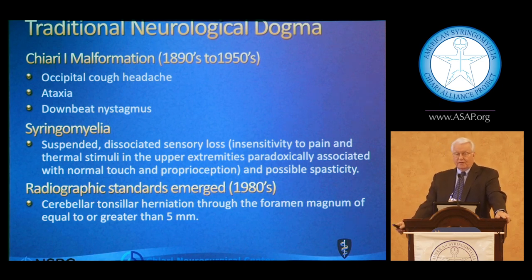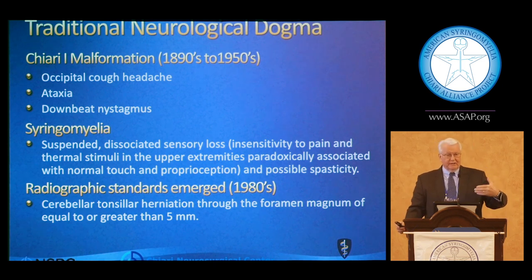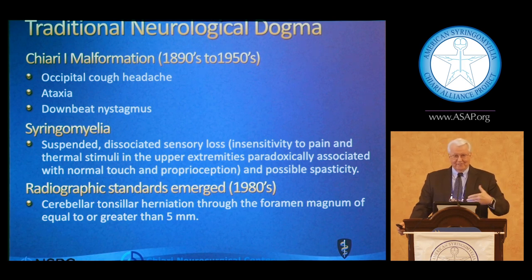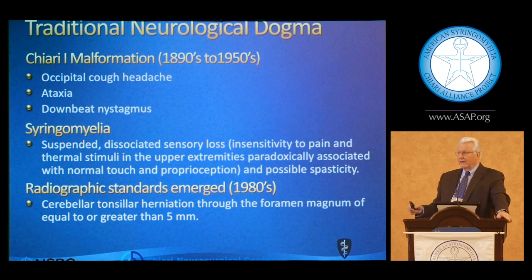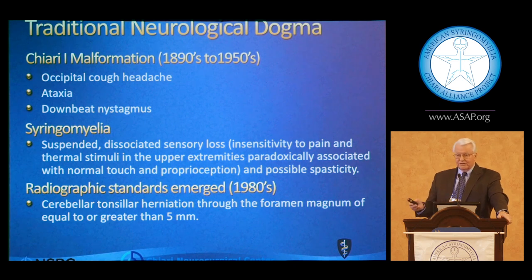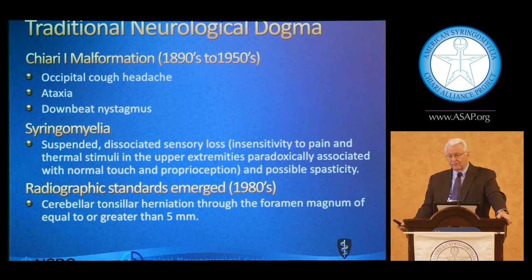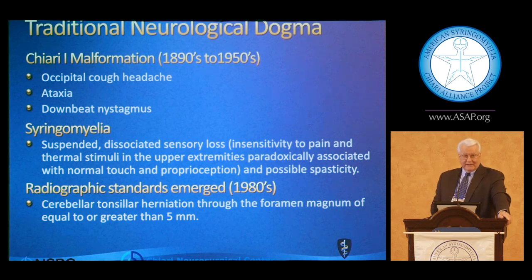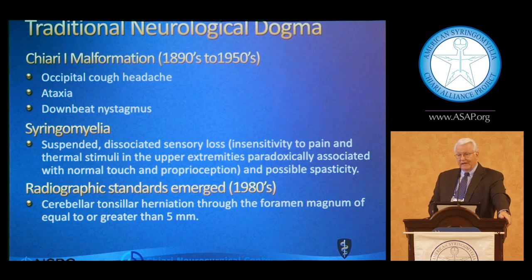Radiographic standards emerged really in the 1980s, and cerebellar tonsillar herniation was easily identified. We went through periods where it was thought to be 3 millimeters, then 3 to 4 or 4 to 5, and now it's kind of 5 or better. As Dr. Cormac Mayer described yesterday, we're really understanding what the normal position of the tonsils is over the lifespan, and how even on imaging technologies there can be a wibble-wobble of tonsillar descent of 1 or 2 millimeters depending on the technology.